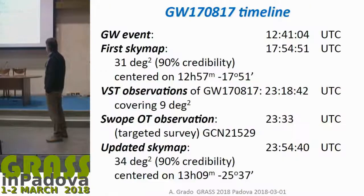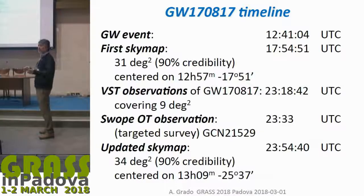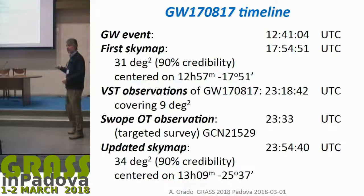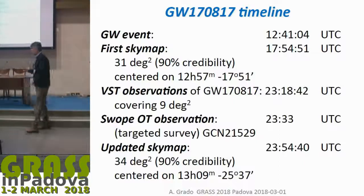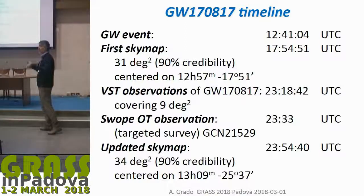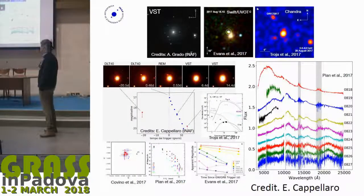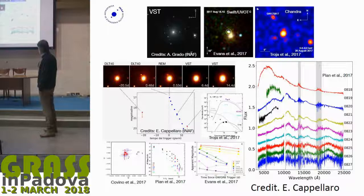Since the alert center was moved, we were very fast but we missed the galaxy NGC 4993 because it was outside our field, unfortunately. Nevertheless, we imaged the field and followed it in the subsequent days, placing points on the faint end of the light curve with VST.